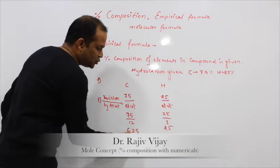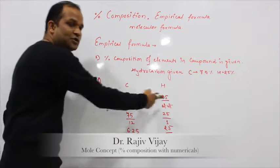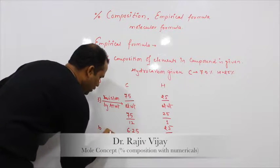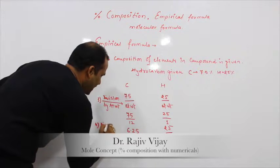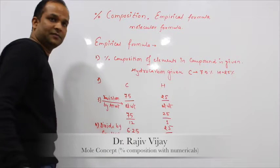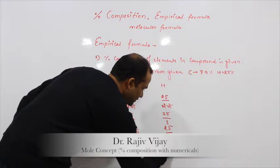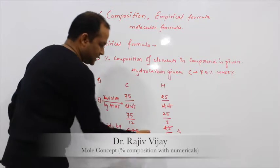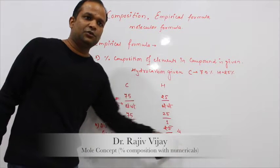Now what will be the next step? After getting these two numbers, divide both numbers by the smallest number which is obtained. Out of these two, which one is the smallest number? 6.25. So divide all numbers obtained by the smallest number — divide by 6.25. We get a ratio of simple numbers, and if it is not a simple ratio, convert it into simple whole numbers.